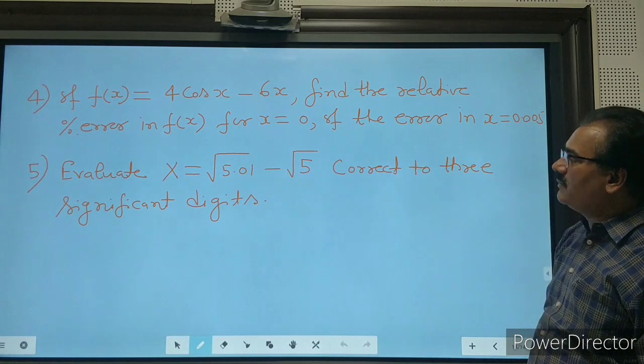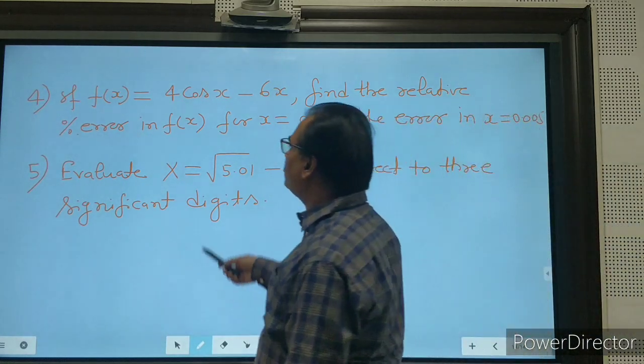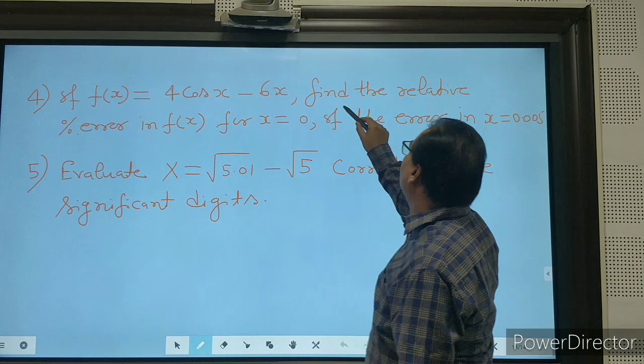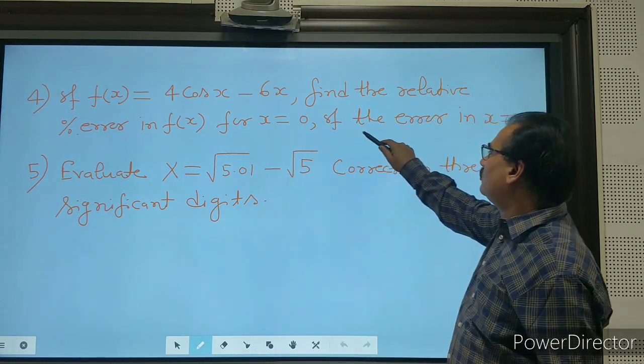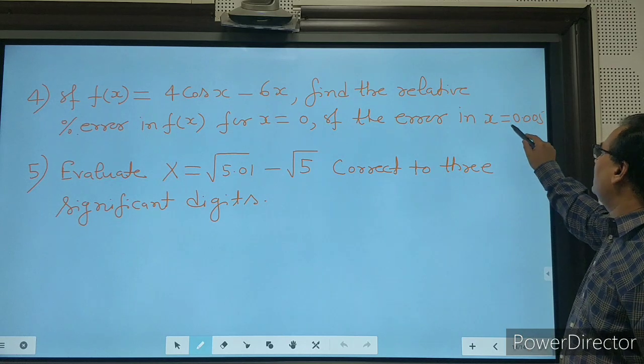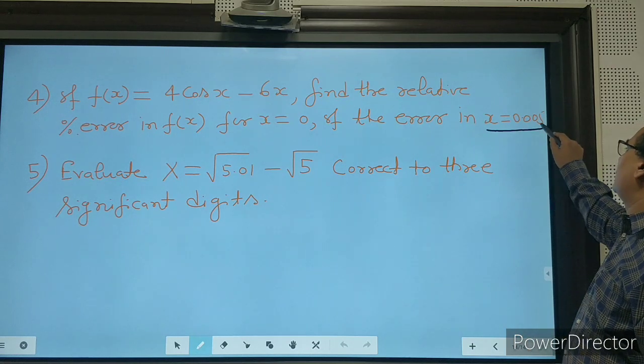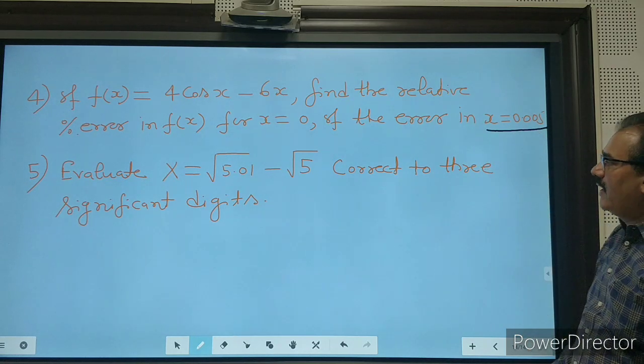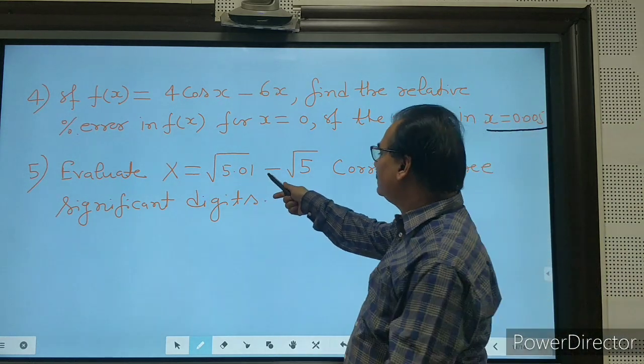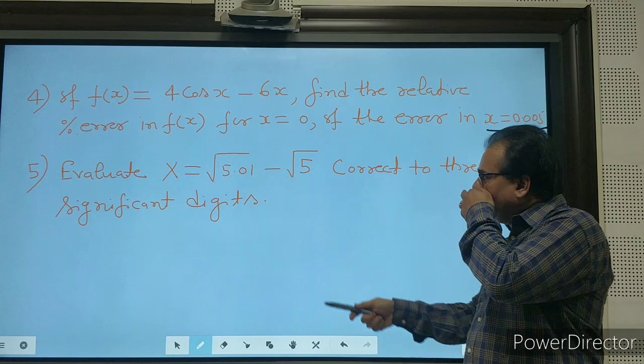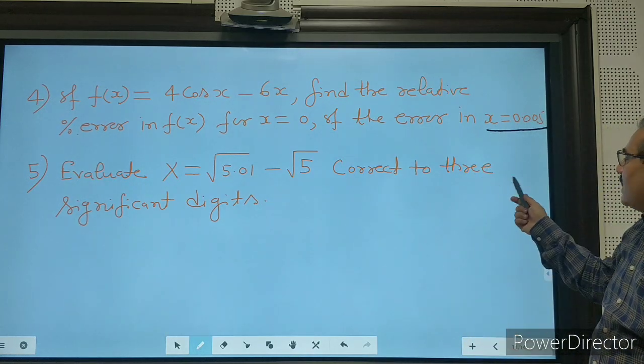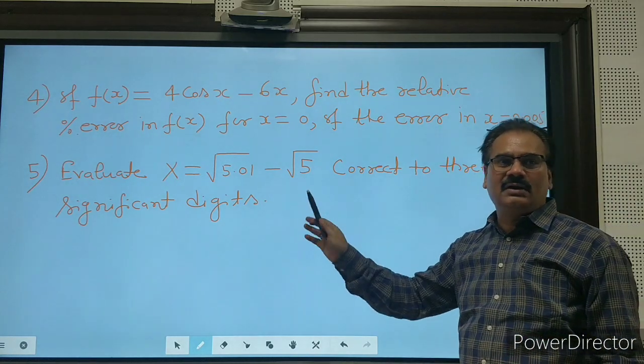These are the two problems you may evaluate. If f(x) = 4cos(x) - 6x, then find the relative percentage error in f(x) for x = 0 if the error in x is 0.005. Evaluate X = √5.01 - √5, correct to three significant digits.